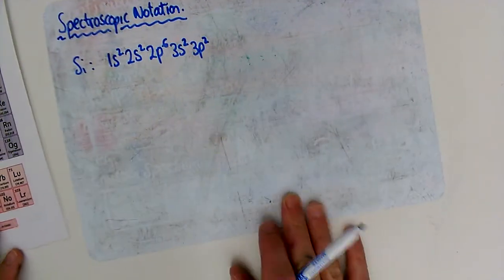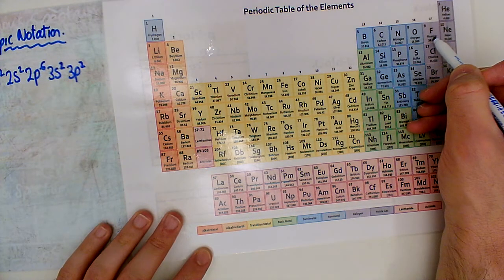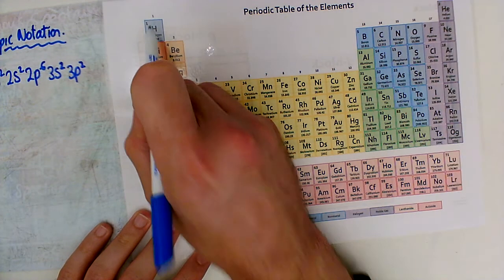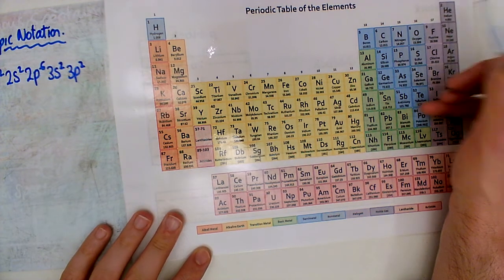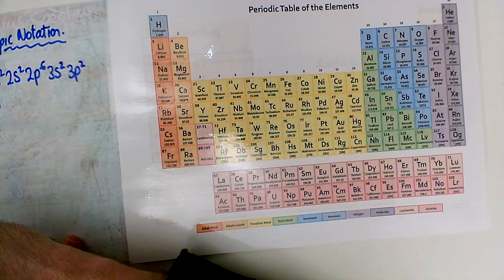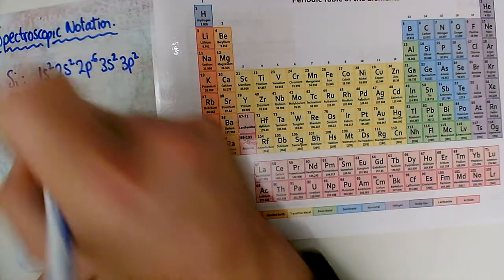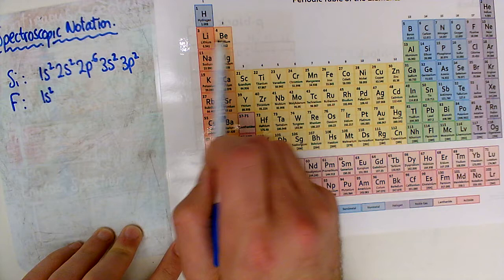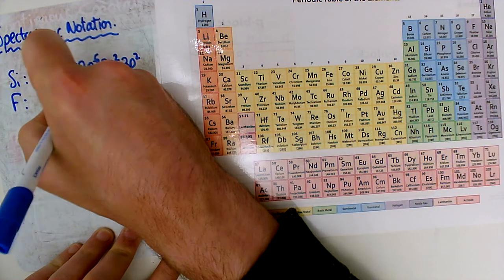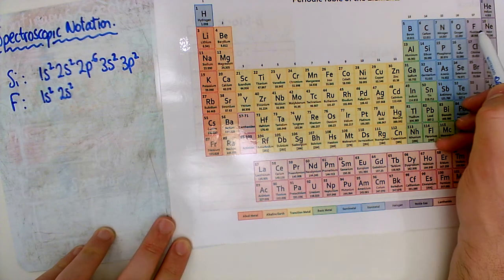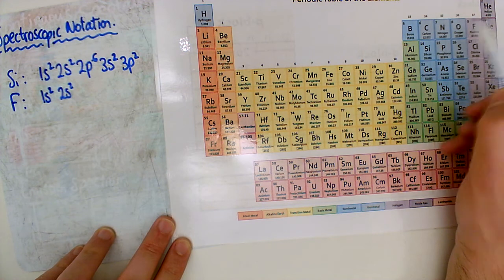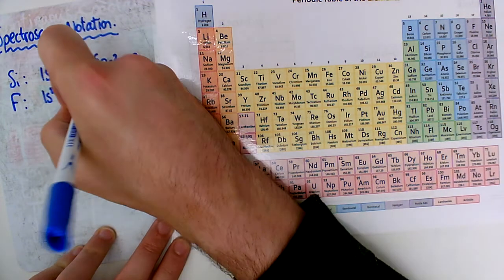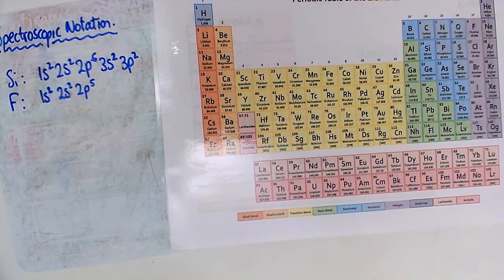Let's try fluorine. Fluorine is in the 2p block. We need to fill 1s first — 1s². Then the 2s orbital is fully filled — 2s². And fluorine is in 2p; counting along the p block gives 5 electrons — 2p⁵. So fluorine is 1s² 2s² 2p⁵.